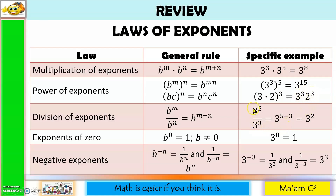For division of exponents, we copy the base, so 3, and then we subtract the exponents. 5 minus 3 is 2, so we have 3 squared. For exponents of 0, any number except 0 raised to 0 is equal to 1. For negative exponents, if you have a negative exponent and you bring the whole expression down, the negative exponent becomes positive. And if you have a negative exponent in the denominator and you bring the expression up, the negative exponent becomes positive.